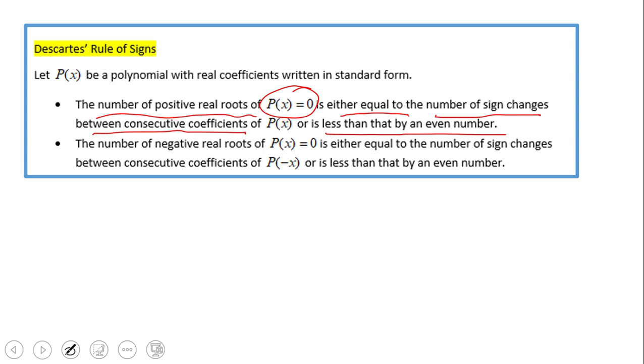The second bullet tells us about the negative real roots. Similar to before, we have a polynomial equation and find out the number of negative real roots. We have either equal to the number of sign changes between consecutive coefficients of, be careful here, P of negative x, or is less than by an even number.